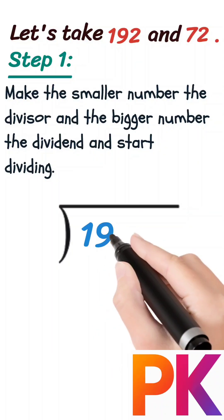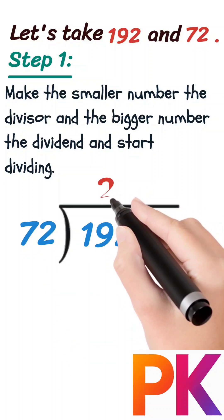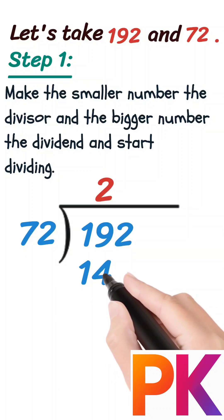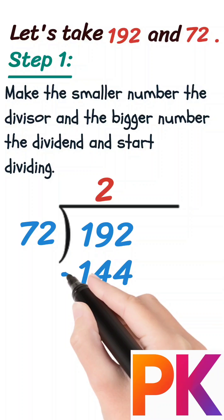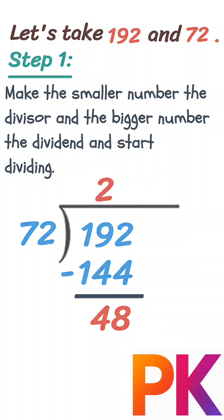So here we will divide 192 by 72. 72 times 2 is 144. On subtracting 144 from 192, we get 48 as the remainder.